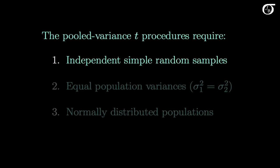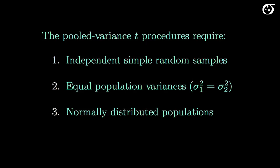Here are the assumptions of the pooled variance t procedures. They require independent simple random samples from the populations of interest, and this is always important even with large sample sizes. They also require equal population variances, which is always important regardless of sample size. Additionally, they require normally distributed populations, and this video will investigate the effect of a violation of the normality assumption on the effectiveness of these procedures.